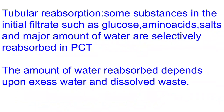During tubular reabsorption, substances such as glucose, amino acids, salts and a major amount of water are selectively reabsorbed in the proximal convoluted tubule. Reabsorption occurs passively — requiring no energy — or actively, requiring energy. The amount of water reabsorbed depends on excess water and dissolved waste.